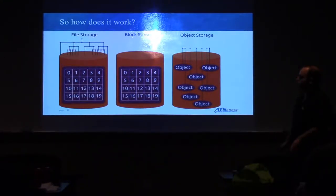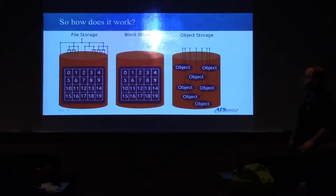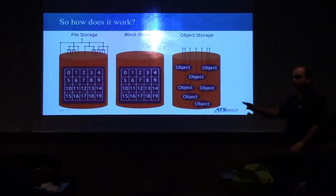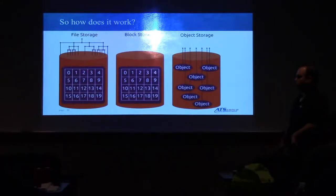Here's a visual example of the differences between file storage, block storage, and object storage — where object storage doesn't have any hierarchy. Everything is just a flat pool with an identifier.